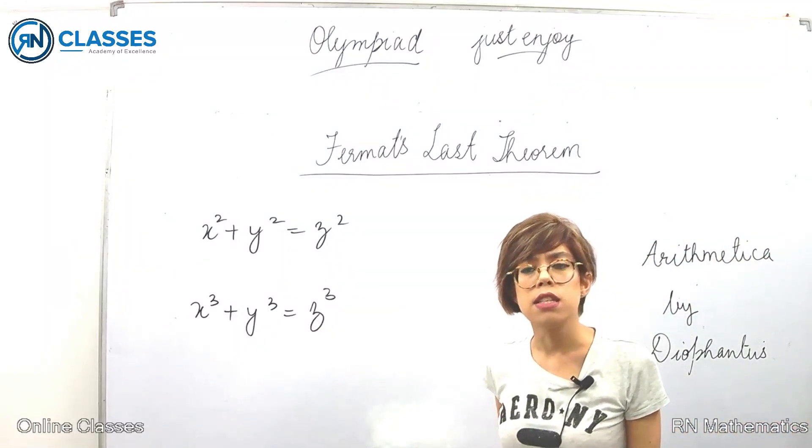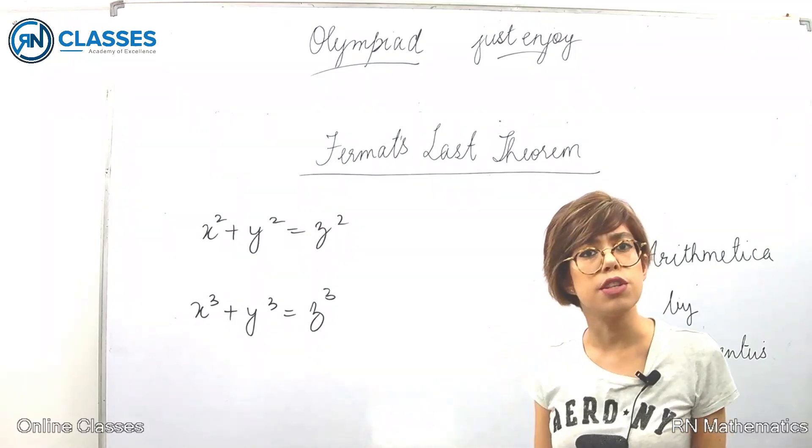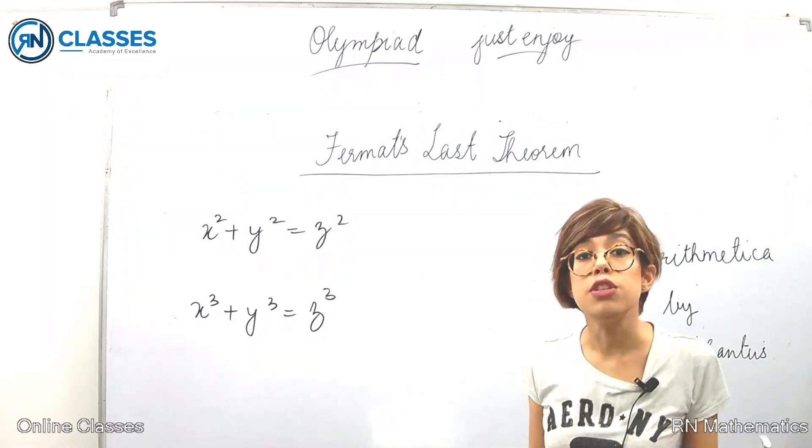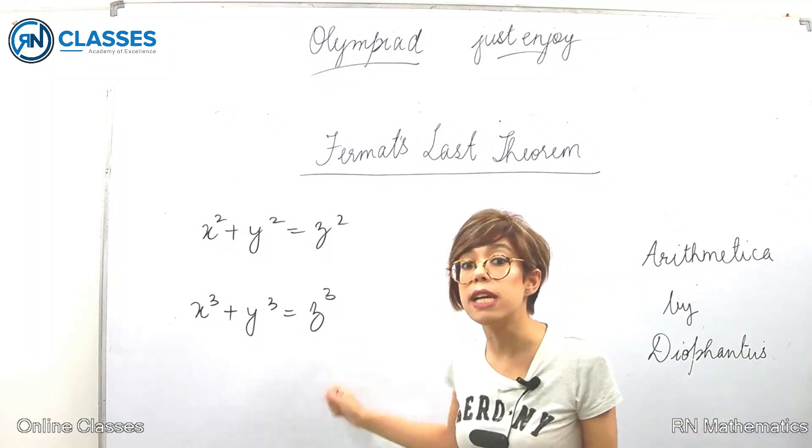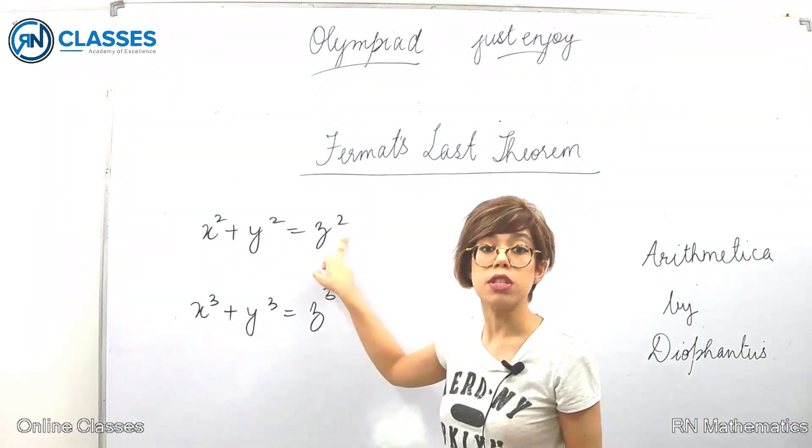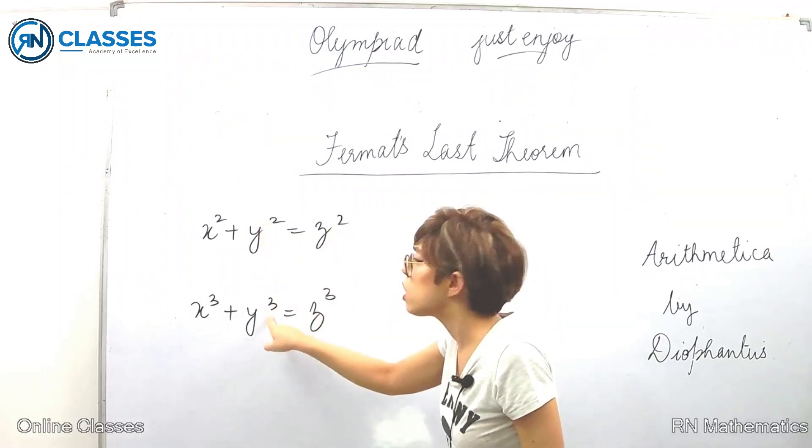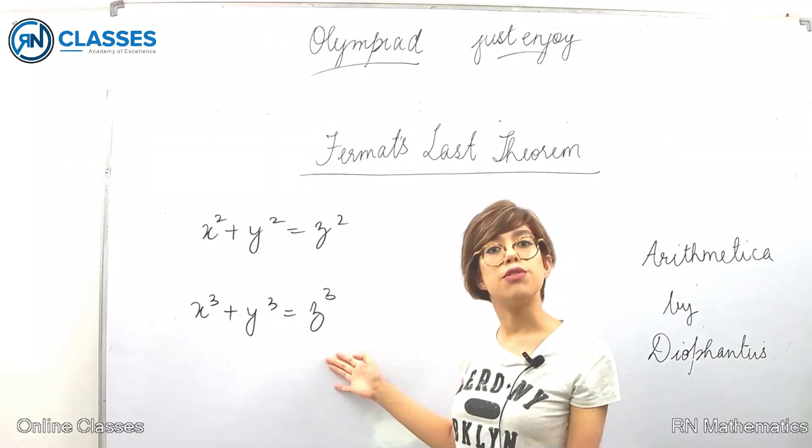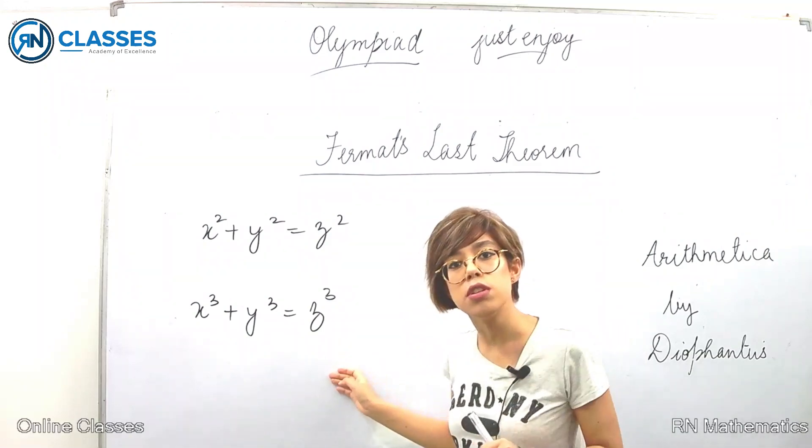Instead of this equation, he started thinking about x³ + y³ = z³. How much difference will it make? He was looking at the solution of this equation. He must have used trial methods to find solutions, and he realized there is no solution to this equation over the collection of natural numbers.